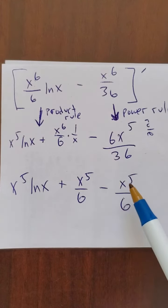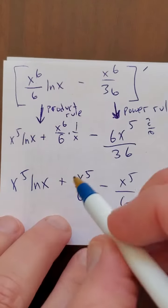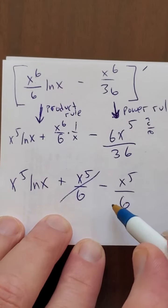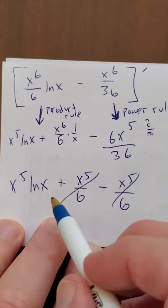And this is minus x to the 5th over 6. Notice that these two guys just cancel. And now I just have this, which was my original integrand.